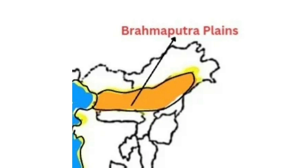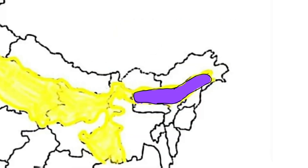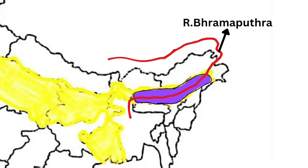Brahmaputra Plains form the eastern part of the Northern Plains and lie in Assam. The Brahmaputra River passes through these plains.